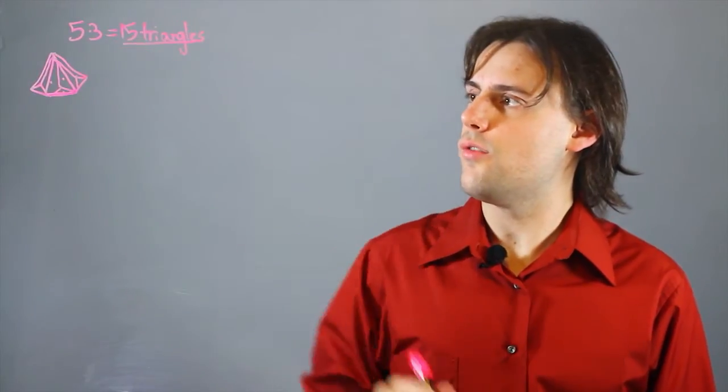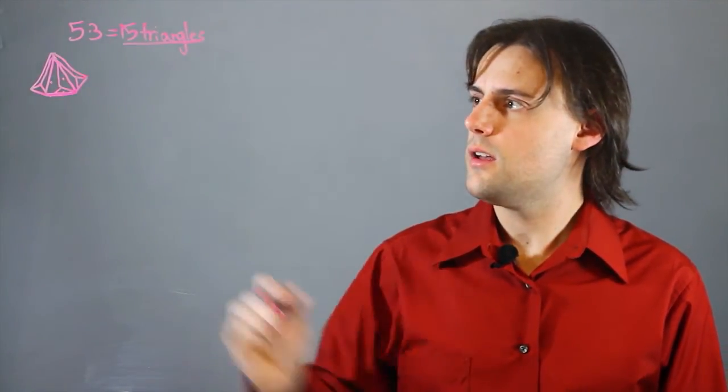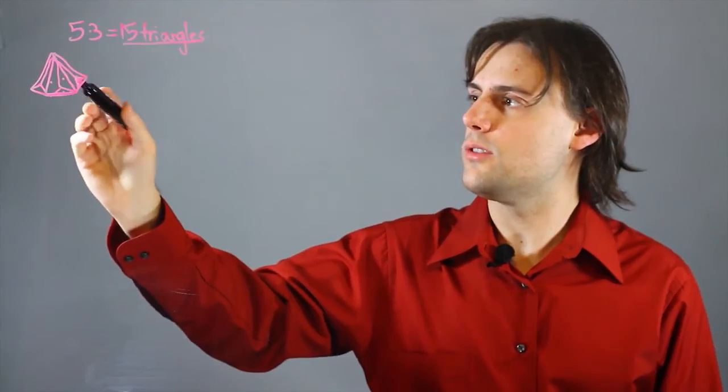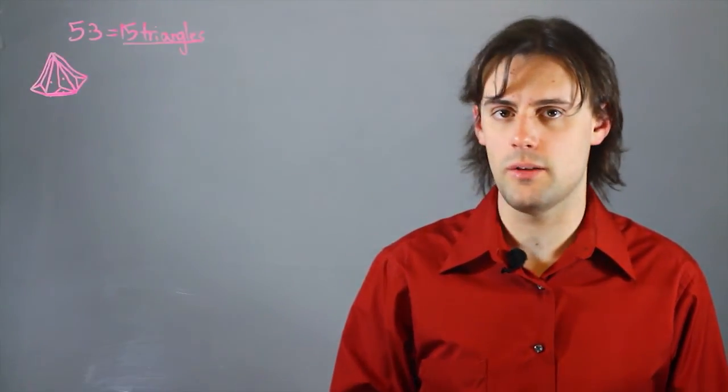Now for a Great Icosahedron, there are 12 of these on the surface of the entire object.